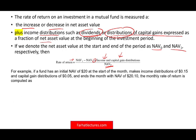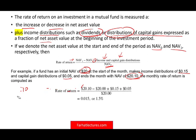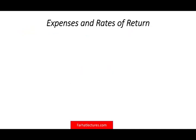For example, if the NAV at the start is $20, and the fund makes an income distribution of $0.15 and a capital gain distribution of $0.05, and the NAV ends at $20.10, how do we measure the monthly return? The difference in price is $0.10, plus $0.05 in capital gain distribution, plus $0.15 in income distribution, divided by the original NAV of $20 — giving us a return of 1.5%.